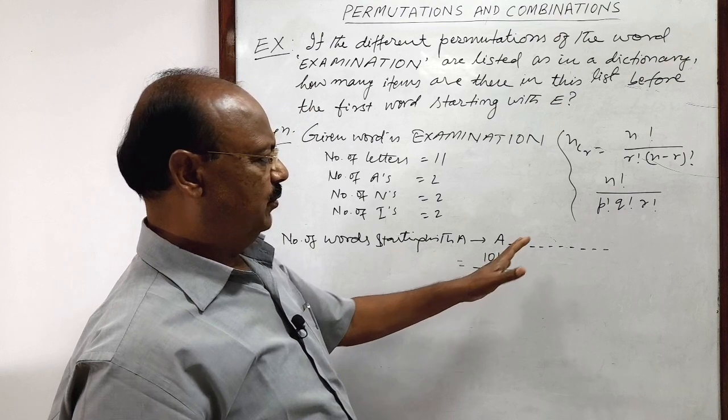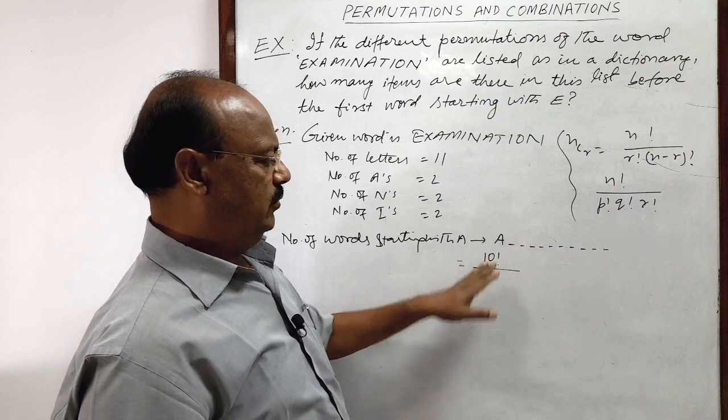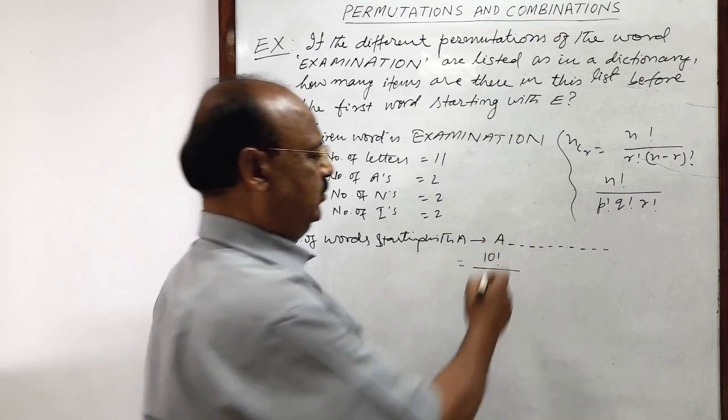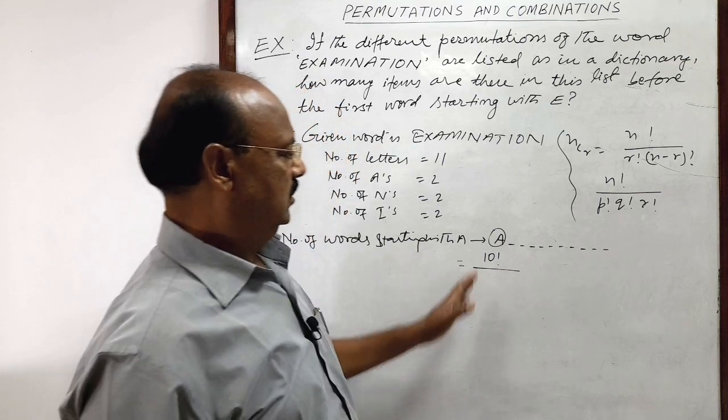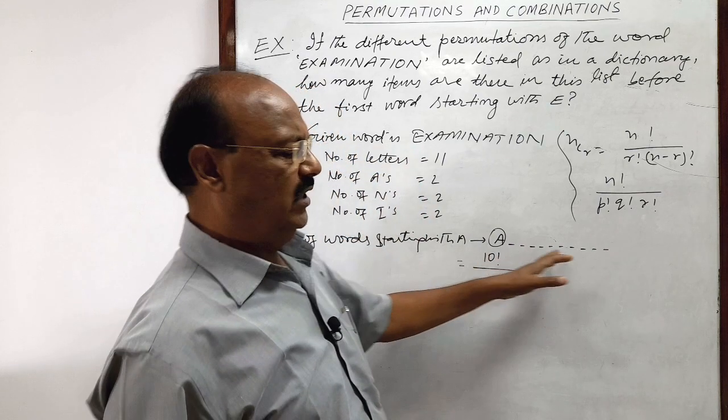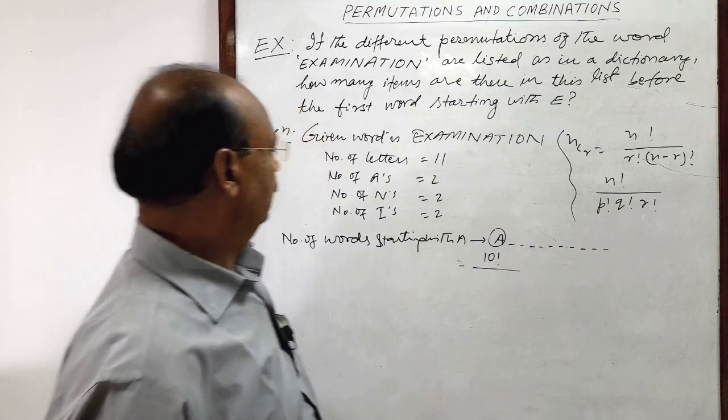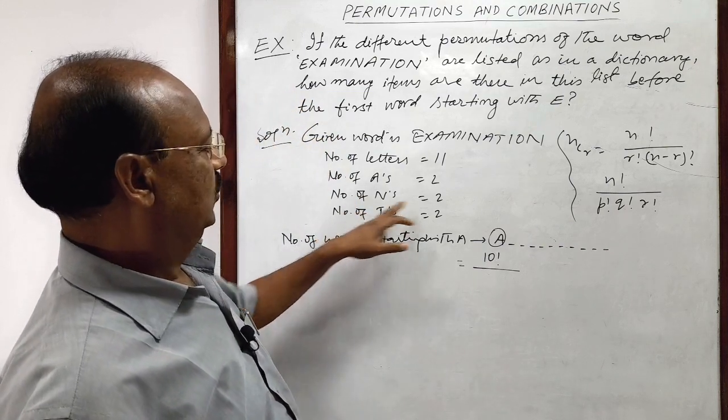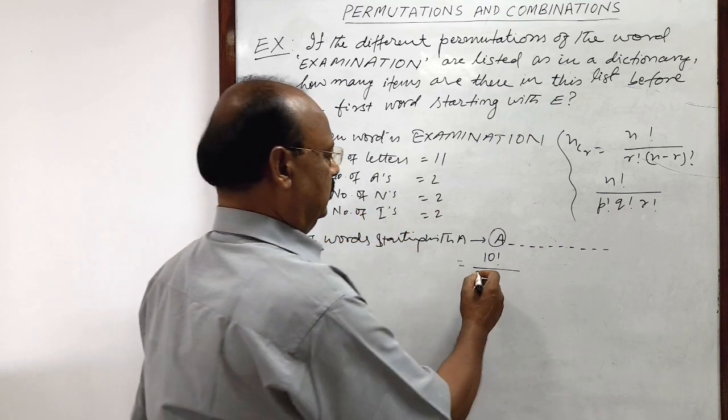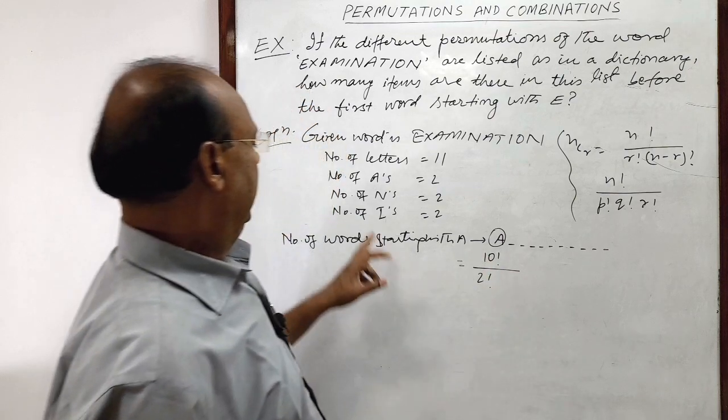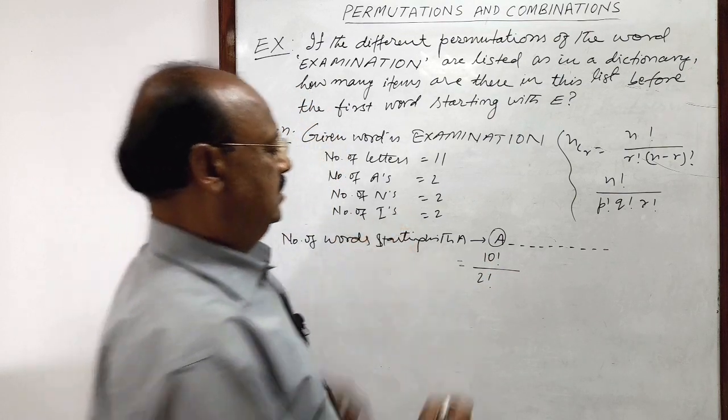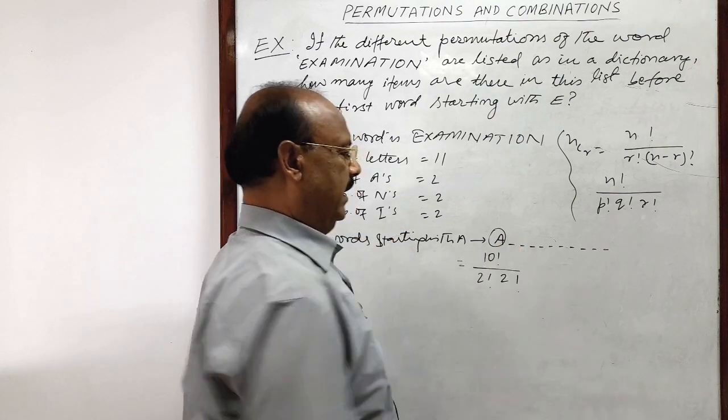So there will be no problem, we should not divide this numerator by 2 factorial, because we are using 1 A here. So in rest of the 10 letters, we are having only 1 A. But we are having 2 n's. So 2 factorial and 2 i's divided by 2 factorial.